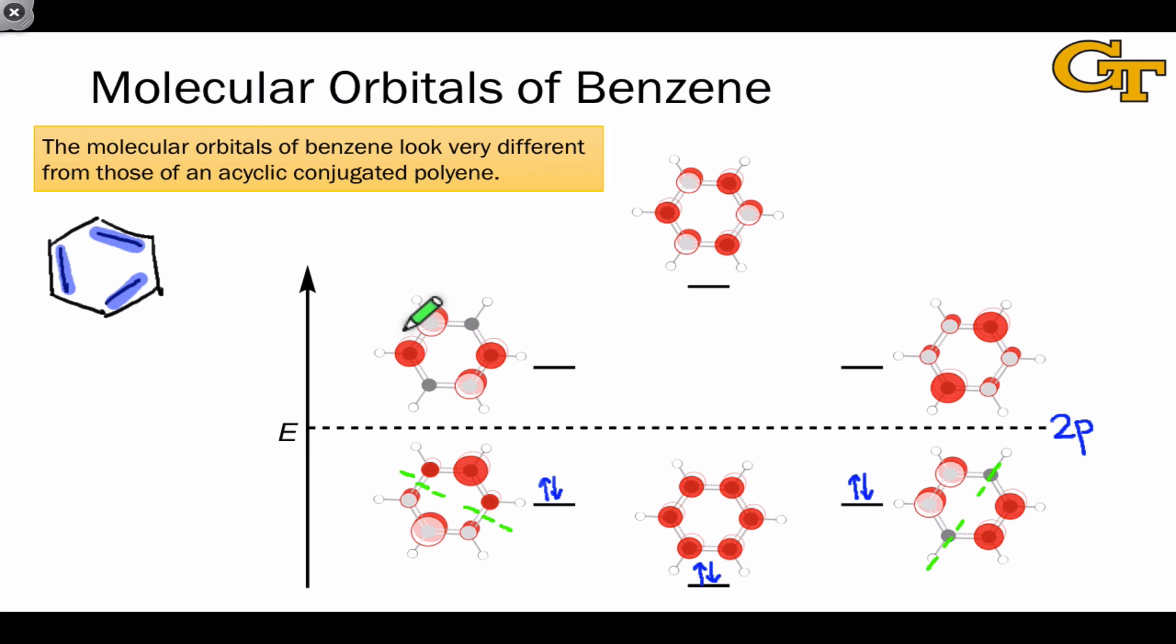In the anti-bonding level, we find four nodes within these orbitals. And there are two ways, as it turns out, to place these nodes within the orbitals, which is why we end up with two degenerate levels. Finally, the highest energy orbital of benzene contains six nodes, as each pair of adjacent p orbitals has opposite phasing and displays destructive orbital overlap.